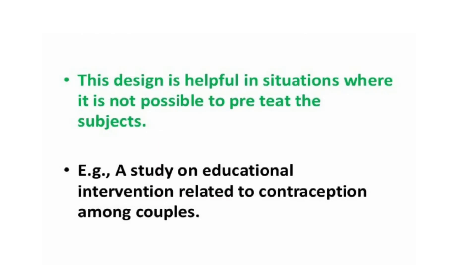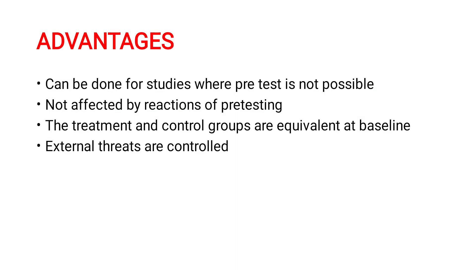This design is helpful in situations where it is not possible to pre-test the subjects. For example, a study on educational intervention related to contraception among couples — here the educational intervention is given only to the experimental group, no pre-test is conducted for either group, and after the intervention a post-test is given to both the experimental and control groups.